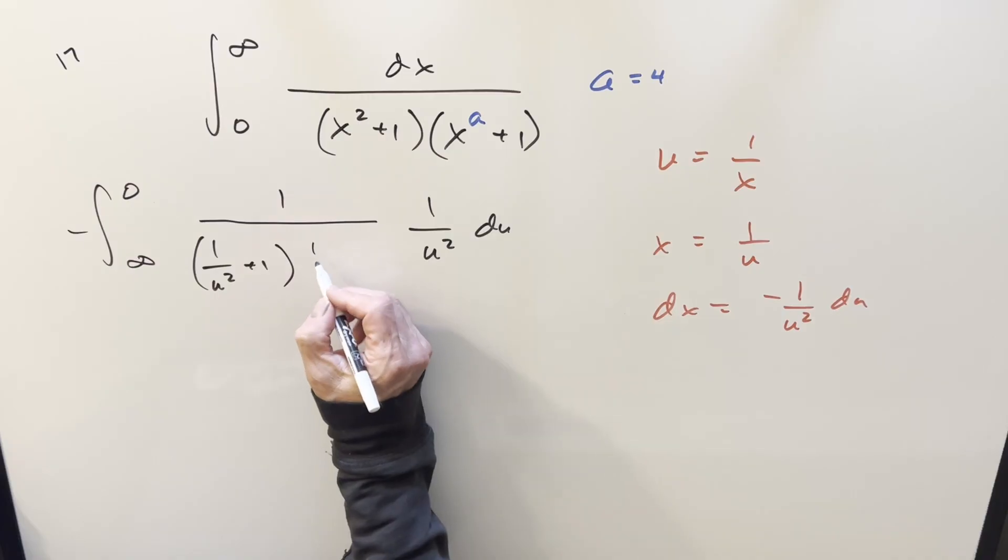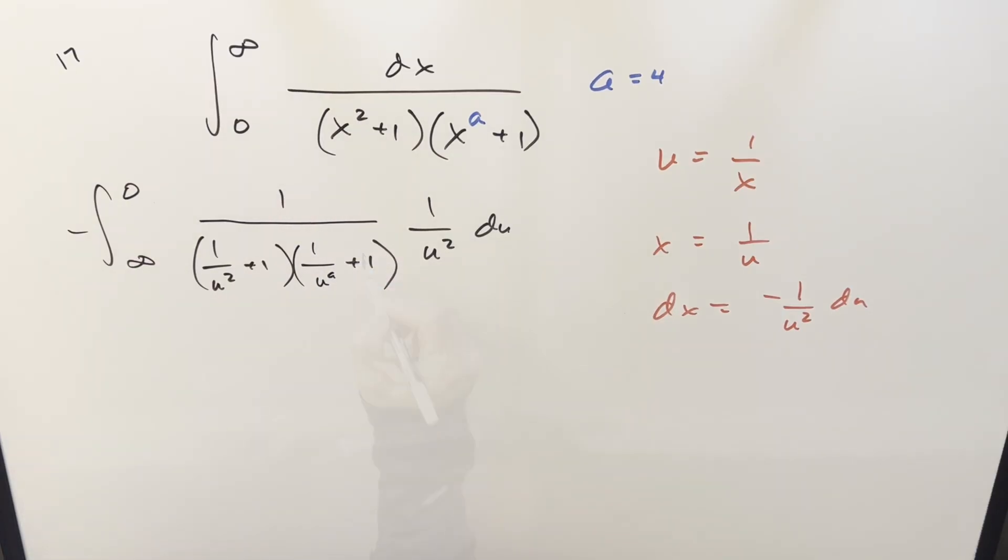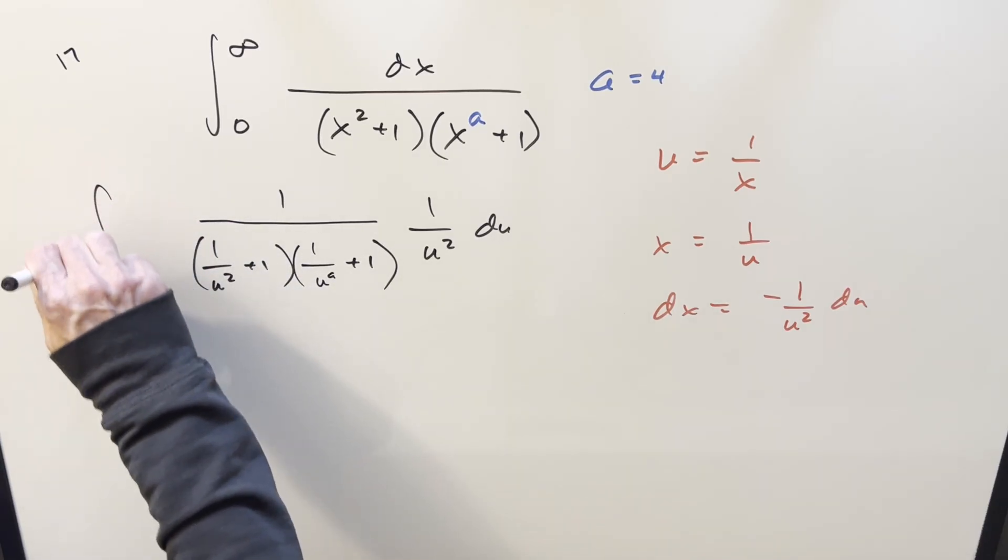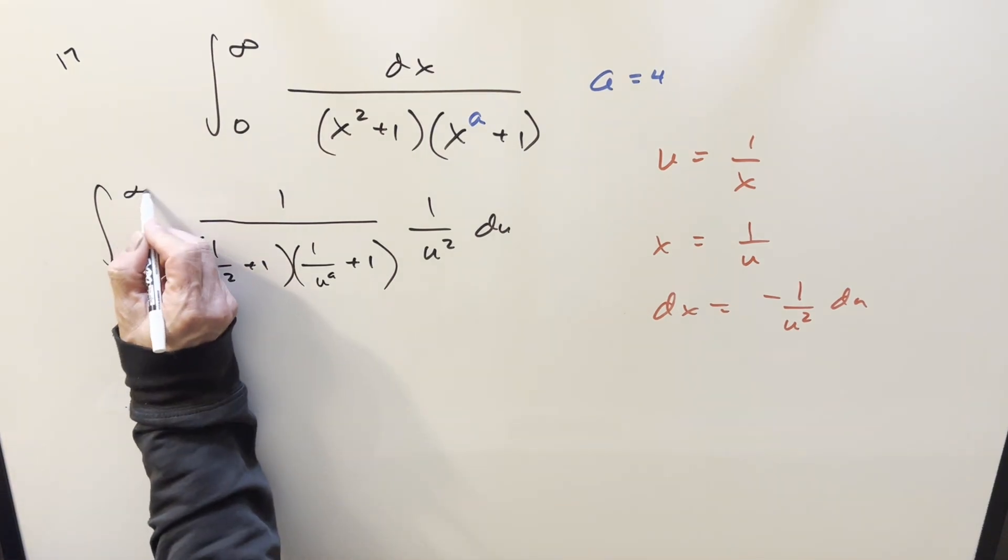And then this one's going to be 1 over (u^a + 1). But then we can do some cleanup. The minus sign, we'll use that to flip the bounds, which is nice because it means the bounds didn't change. We're just back to where we were here, going from zero to infinity.